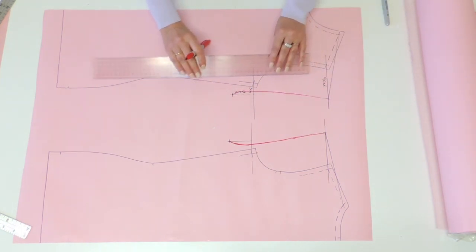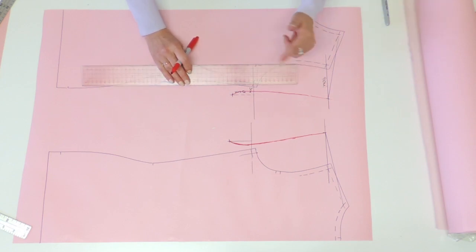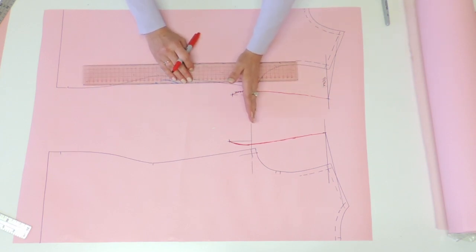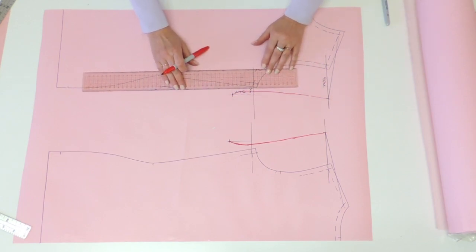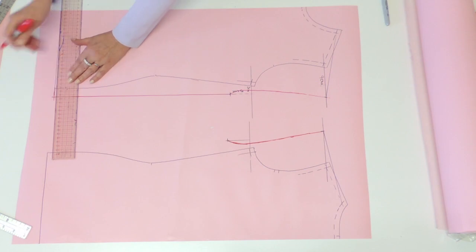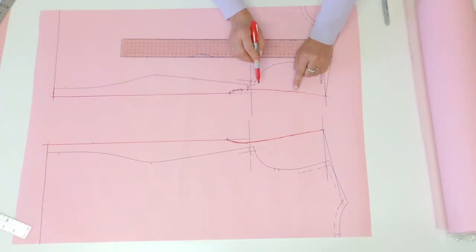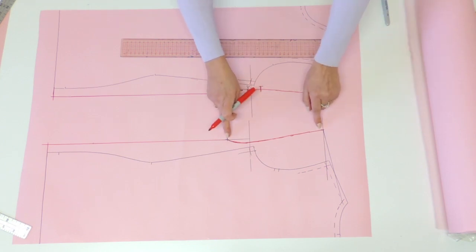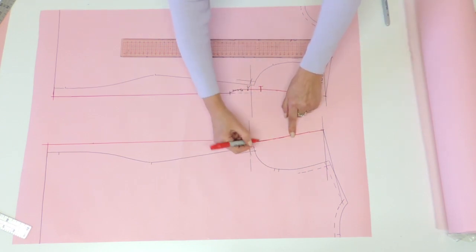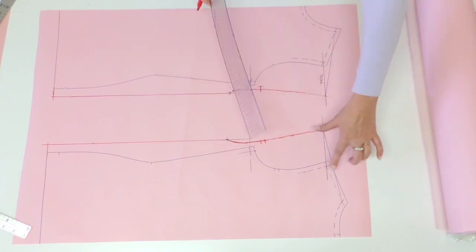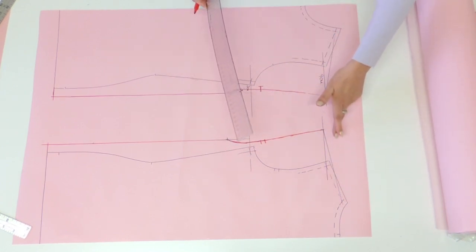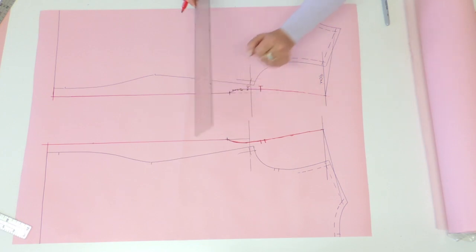The last thing we have to do is to trace the side seam and I would do it 90 degree from the underarm line that we did or parallel to center front and back. Before I put my seam allowance I'm going to place my notch so you measure pretty much the first one third from the underarm on the front. Same thing in the back so divide it by three and you place your double notch. Now we could place the seam allowance on shoulder, armhole and the new side seam.